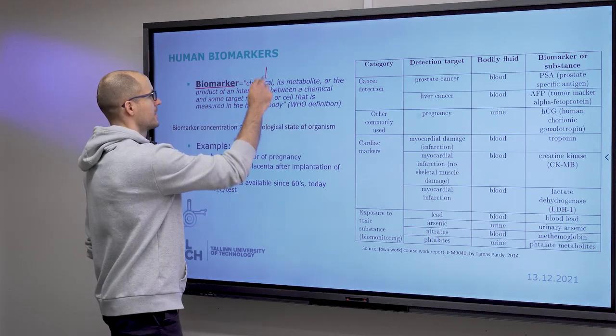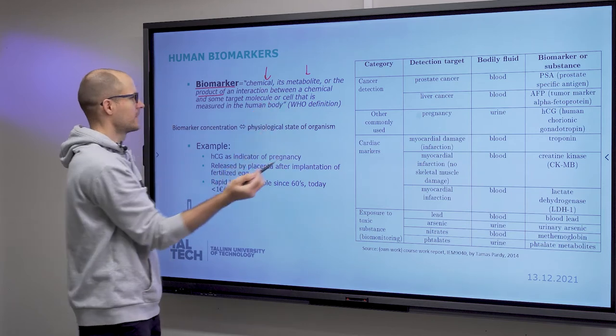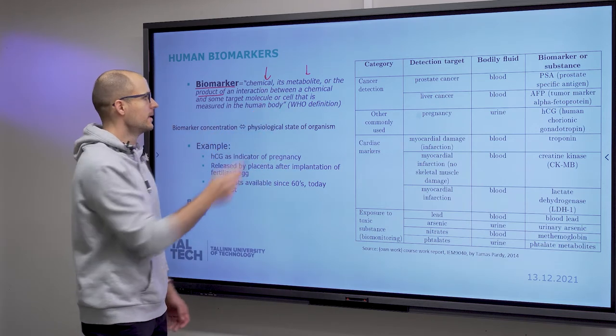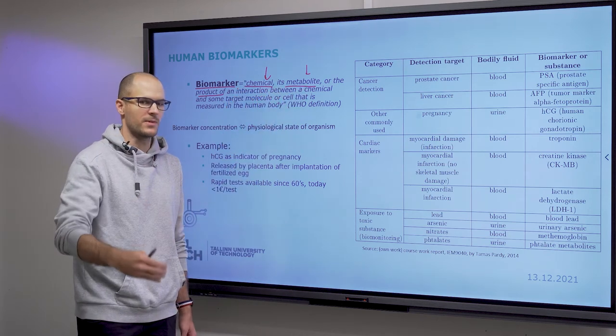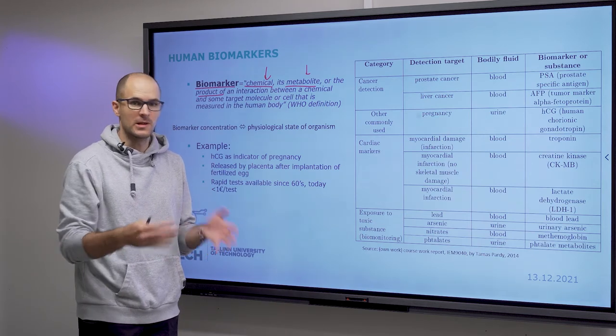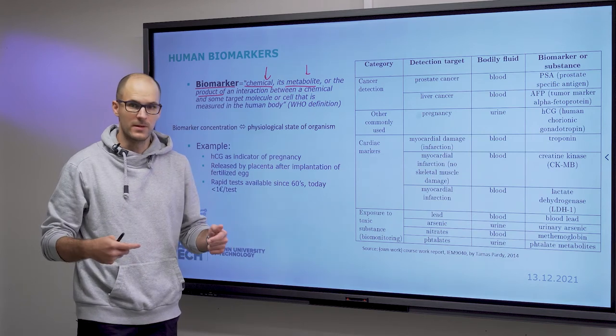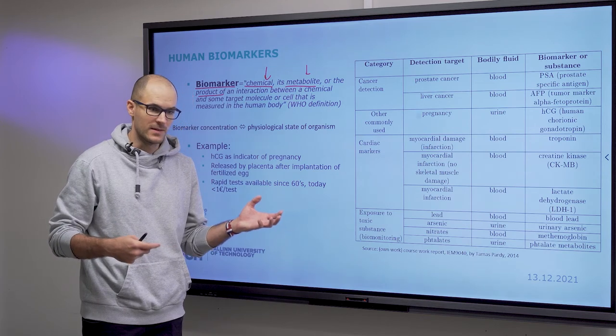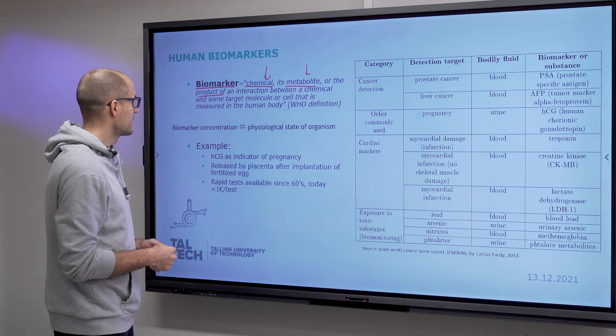Now about biomarkers. So biomarkers mean a chemical, its metabolite, or a product of an interaction between a chemical and some target molecule or cell that is measured in the human body. Chemical metabolite means that it has already been processed by the body—for instance the active formulation of a drug, or the active metabolite of a drug that has already been processed by the liver, or the metabolite that is excreted after being processed. These are the things that you can consider.